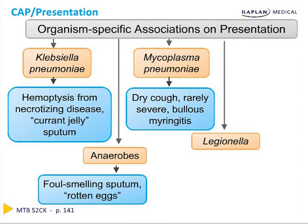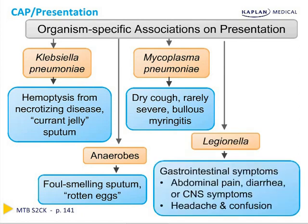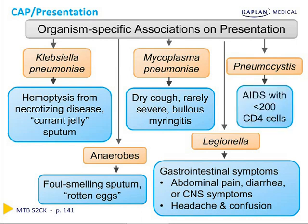Legionella pneumonia, as we've already mentioned, sometimes has gastrointestinal symptoms such as pain, diarrhea, or even some CNS symptoms such as headache or confusion. Lastly, Pneumocystis pneumonia is usually seen in patients with AIDS with a CD4 count less than 200.